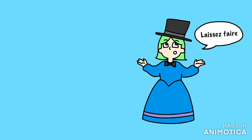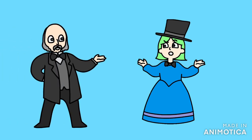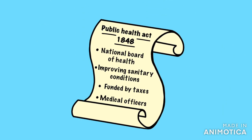Was Chadwick important? In the early 1800s the government followed a laissez-faire approach to public health – it didn't feel it was its role to improve living conditions and didn't want to interfere. However, when Chadwick's report was published it helped create awareness of the need for government intervention. As a result, they passed the first Public Health Act of 1848. The National Board of Health was set up; the government could force some town councils to improve water and sewage; local councils were told to collect taxes for public health improvements; and councils were allowed to appoint medical officers. But it wasn't compulsory, and this was pre-germ theory, so many local councils did nothing and public health didn't improve.